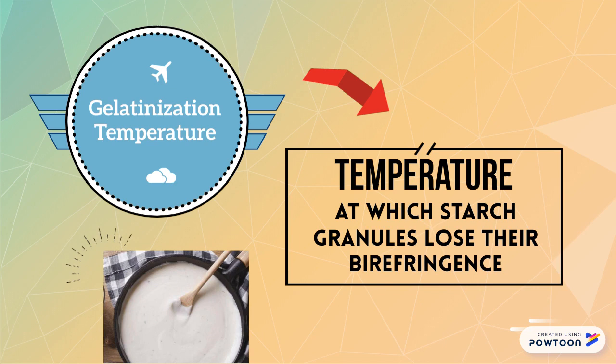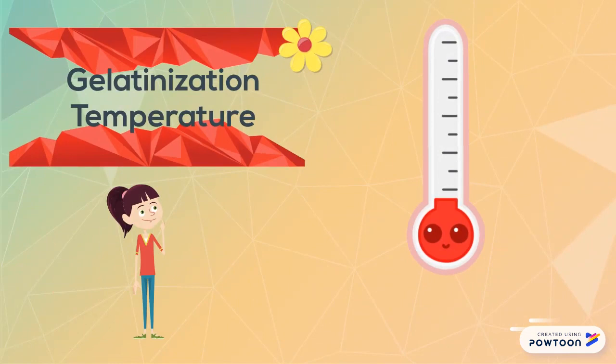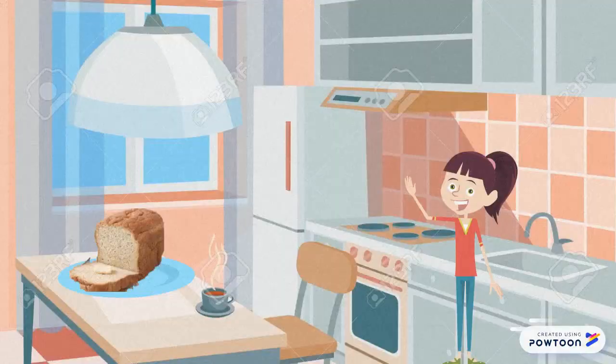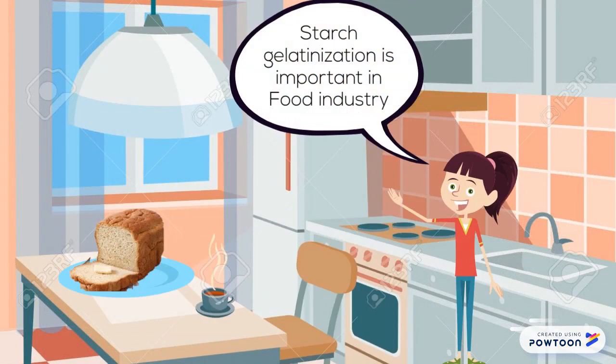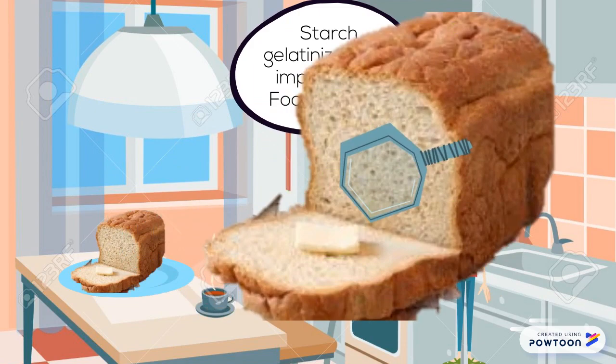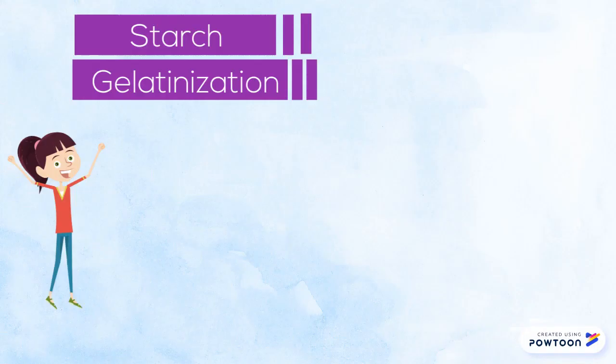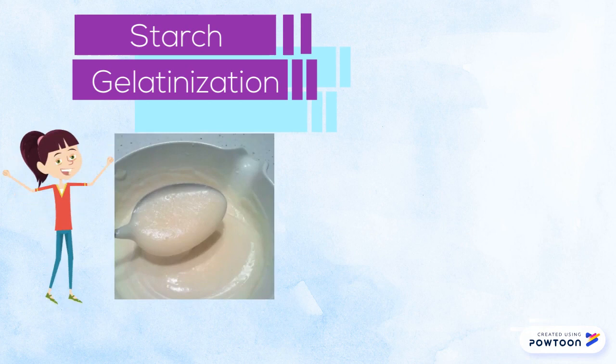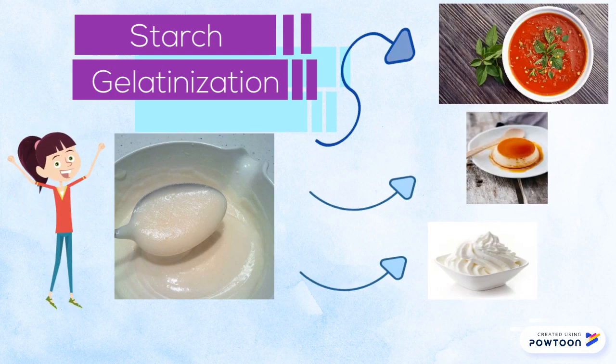The temperature at which granules lose their birefringence is referred to as gelatinization temperature, which often occurs in the range of 55 to 75 degrees Celsius. Such gelatinization is important in the food industry, such as the formation of normal bread crumb structure in bread. Besides that, the gel formed from gelatinization is also widely used in sauces, puddings, creams, and other foods to produce a pleasant texture.